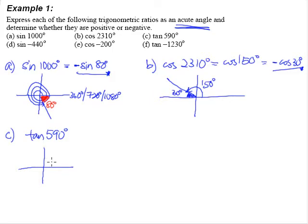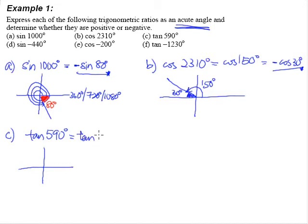We want to find out exactly how much past one round we are. So we take 590 degrees minus 360 degrees, which gives us 230 degrees. Tangent 590 degrees is therefore the same as tangent 230 degrees.